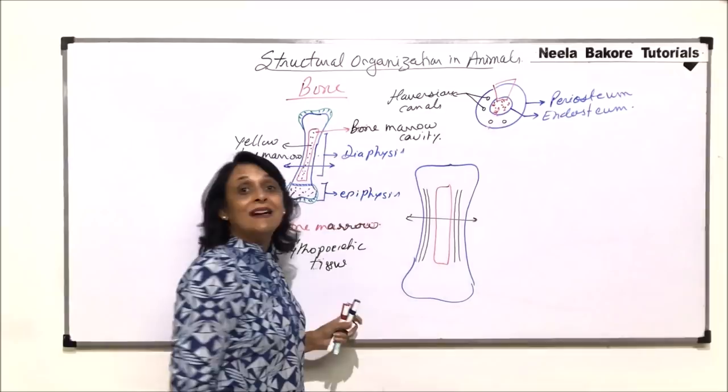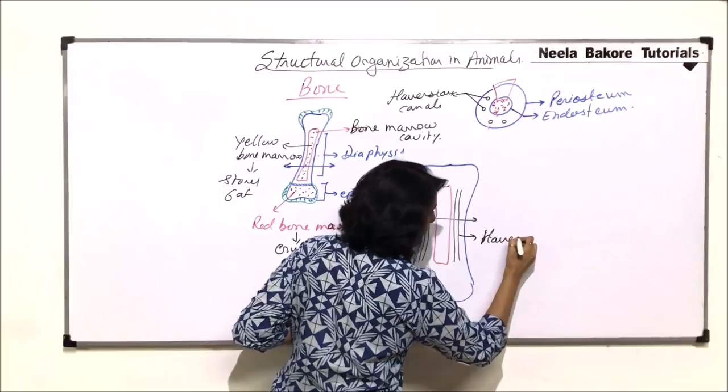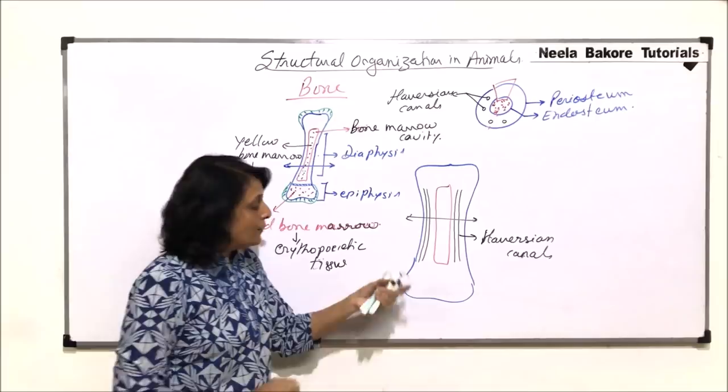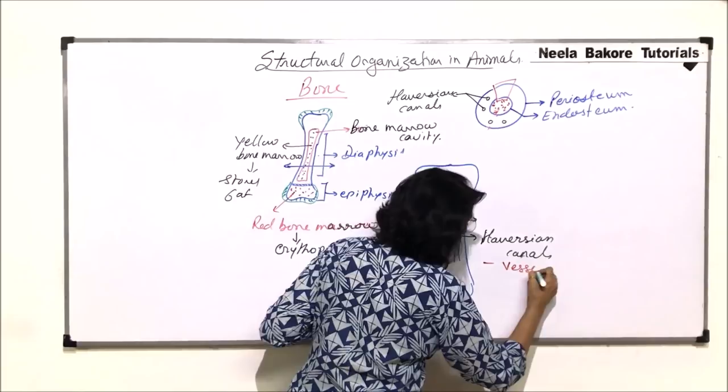If we take a section, we would see these canals cut. This is the Haversian canal. Haversian canals. These canals run vertically or along the length of the long bone.